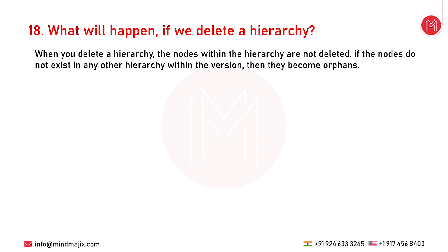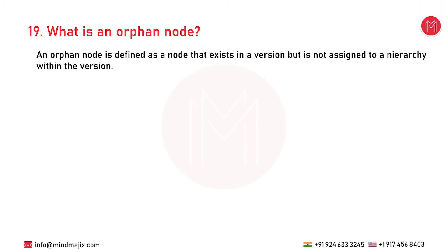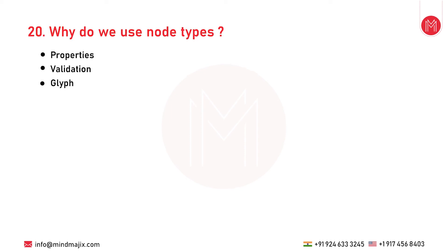The next question is: what will happen if we delete a hierarchy? When you delete a hierarchy, the nodes within the hierarchy are not deleted. If the nodes do not exist in any other hierarchy within the version, they become orphans. An orphan node is defined as a node that exists in a version but is not assigned to a hierarchy within the version. Orphans may exist pending a cleanup to completely remove them, or they may be awaiting reassignment to hierarchies.